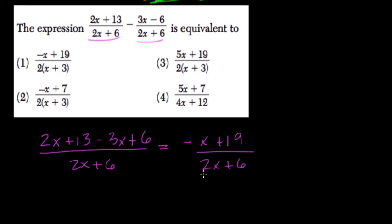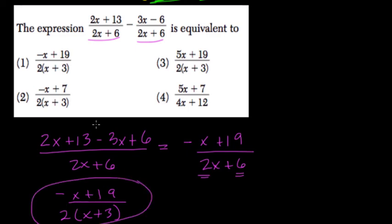Well here, they don't want to leave 2x plus 6 as it is, because both terms have a factor of 2. So I rewrite this as negative x plus 19, over 2 times x plus 3. Right, we just factor that 2 out, and that's choice 1 here.